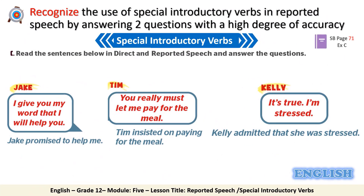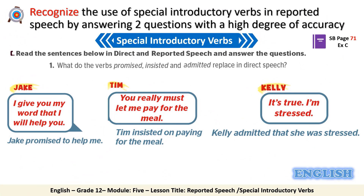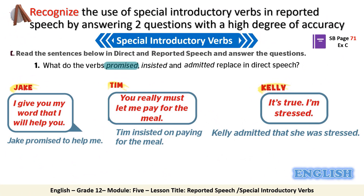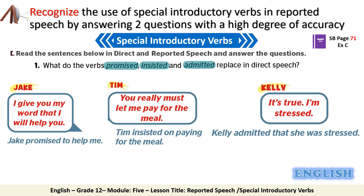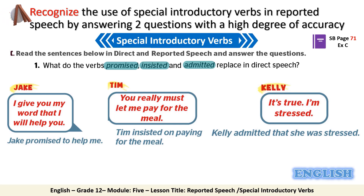We will start with activity C, page 71. I would like you to read the sentences in the speech bubbles and the reported speech below them, and find out what replaces the verbs 'promised,' 'insisted,' and 'admitted' in the direct speech. Please pause this video here and do the task.